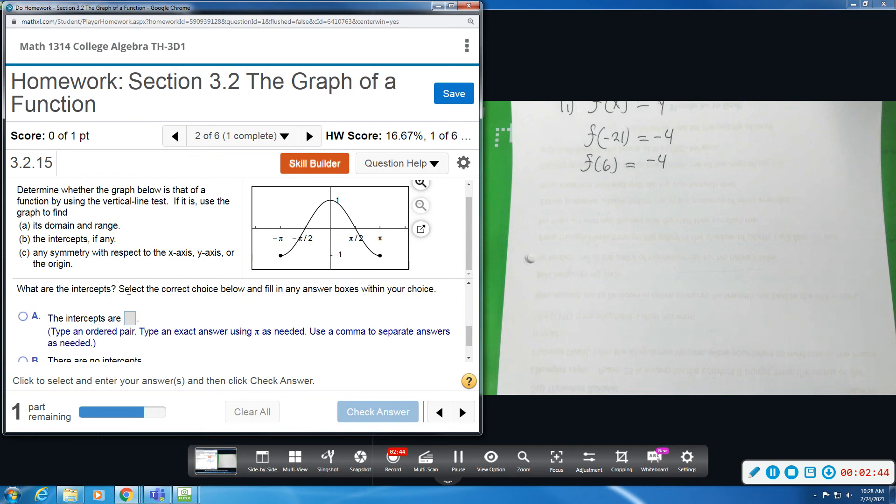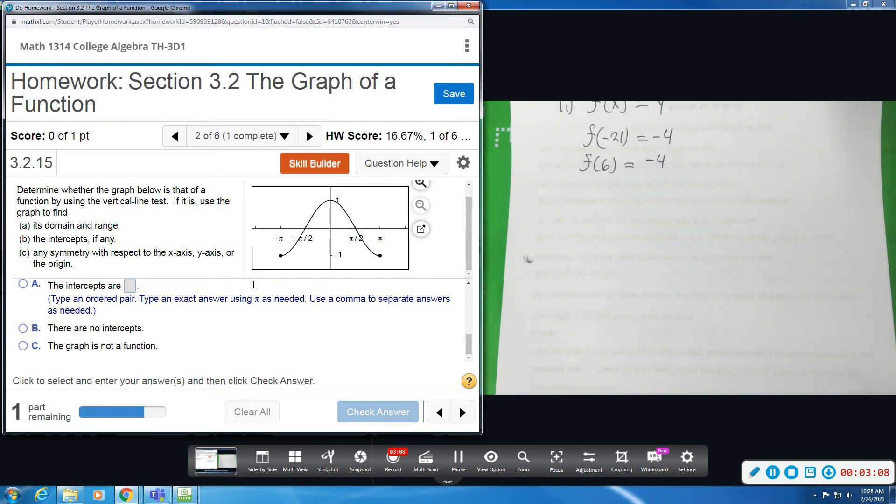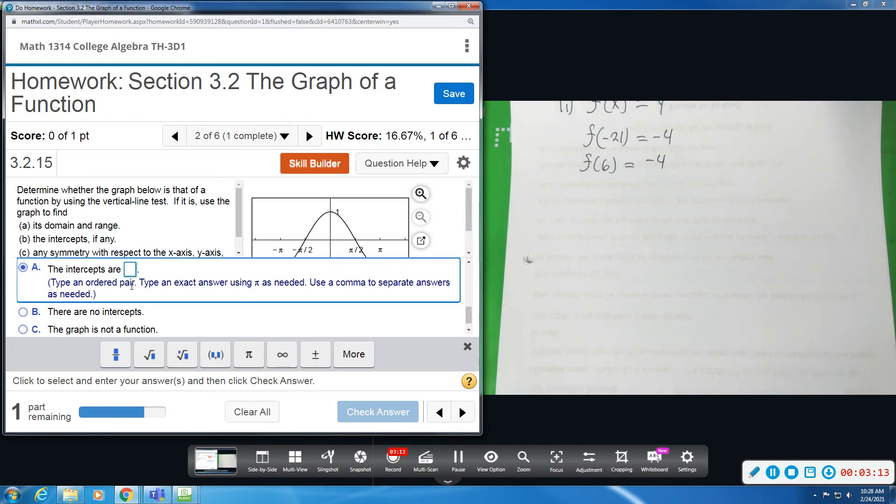Okay, so now we want to find intercepts. We're going to type an ordered pair, use exact answer using pi's if we need. Okay, so intercepts. It crosses the x-axis twice, so there's two x-intercepts, and then it crosses the y-axis once, so there's one y-intercept. And it just says intercepts, so we're going to type all of them. So x-intercepts first. You can see it looks like it's crossing, and this is labeled as negative pi over 2. We have to type exact answers. So ordered pair, we're going to have negative pi.